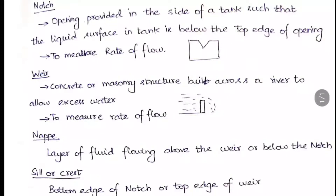The second one is the weir. A weir is nothing but a concrete or masonry structure built across a river to allow excess water. We have seen this weir-type structure many times — across a river they construct materials so that the water can be held and saved there, and only the overflowing water passes through to the downstream. This is called a weir, and it also has many shapes and is used to measure the rate of flow.